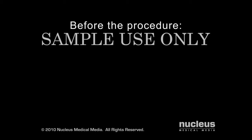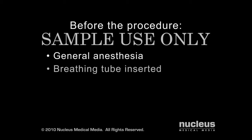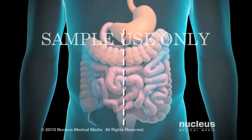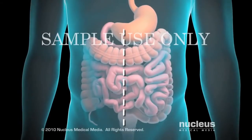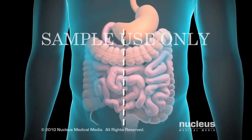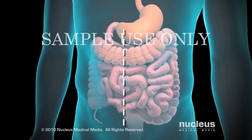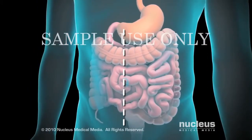Before the surgery, you will be given general anesthesia to put you to sleep for the duration of the operation. A breathing tube will be inserted through your mouth and into your windpipe to help you breathe. Your surgeon will begin by making an incision in your abdomen over the part of the colon that needs to be removed.